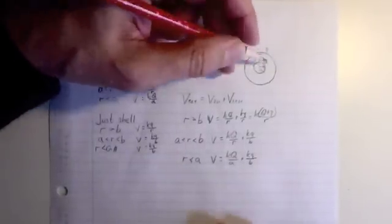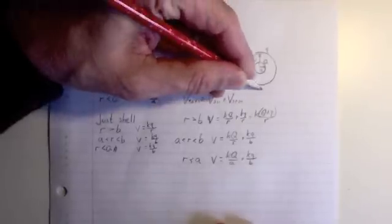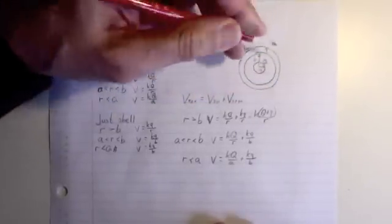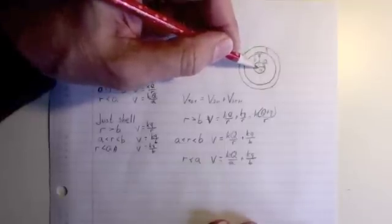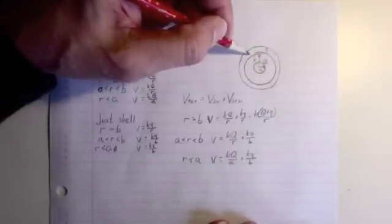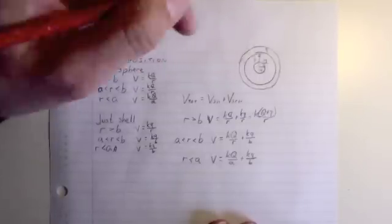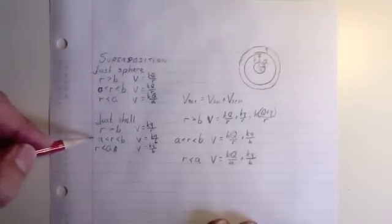The big trouble with this is that, for example, if this shell is not infinitesimally thin, this charge in here will have an effect on this. So when we do superposition, we can look at this shell, but only the way the charge distribution is in presence of the sphere. So this becomes significantly more complicated, and that's what I'm going to look at in the next video.